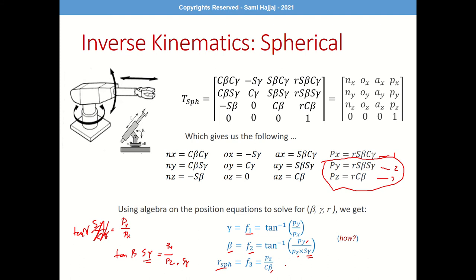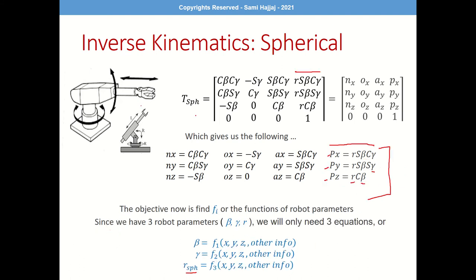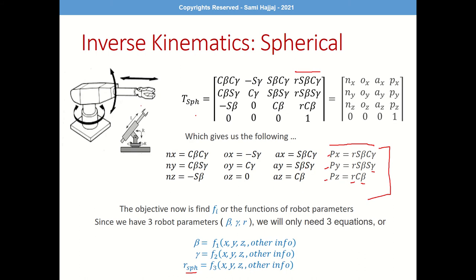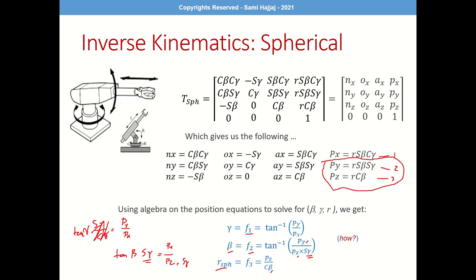However, when it comes to more complex robots like those with Euler or RPY orientations — RPY being rotate about X, Y, Z in sequence — the equations become very complicated. If you had developed those matrices, you'd realize that using algebra is not possible. Let me look up the RPY matrix online to show you what I mean.